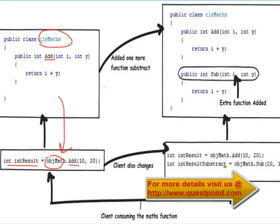Over a period of time somebody goes and adds a subtract function in the CLSMaths class. If you want to use this subtract function in your UI code, then you have to again call the .sub method, because you have named the subtract function as sub. Any changes in your business object, i.e. CLSMaths, will lead to changes in your UI code. In other words, there is a heavy coupling between CLSMaths and your UI code.